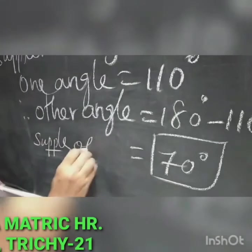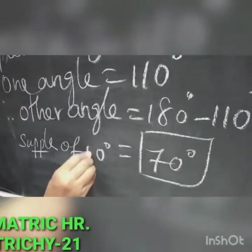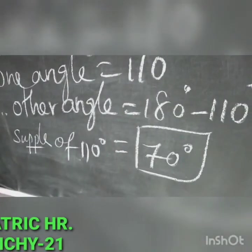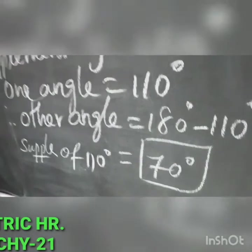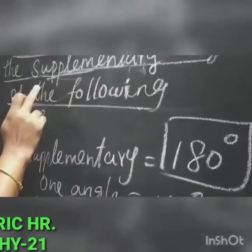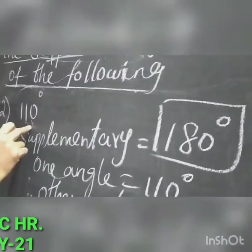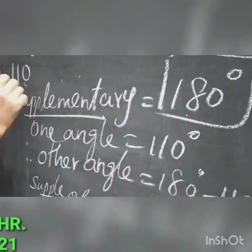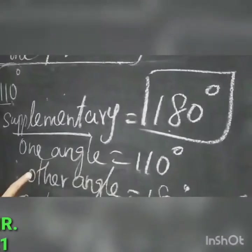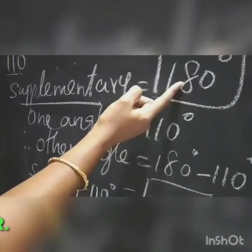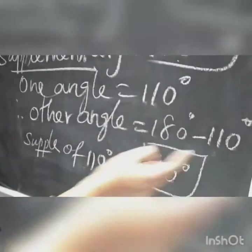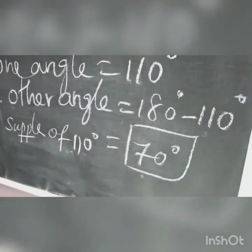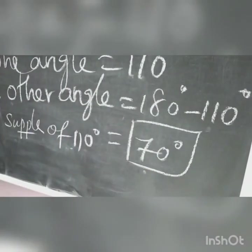Therefore, the supplementary of 110 degrees equals 70 degrees. This is the second sum — 110 degrees is given, and supplementary means a pair of two angles totaling 180 degrees. One angle is 110, so from 180 subtract 110, and the balance is 70 degrees. The supplementary of 110 degrees equals 70 degrees. Is it clear?